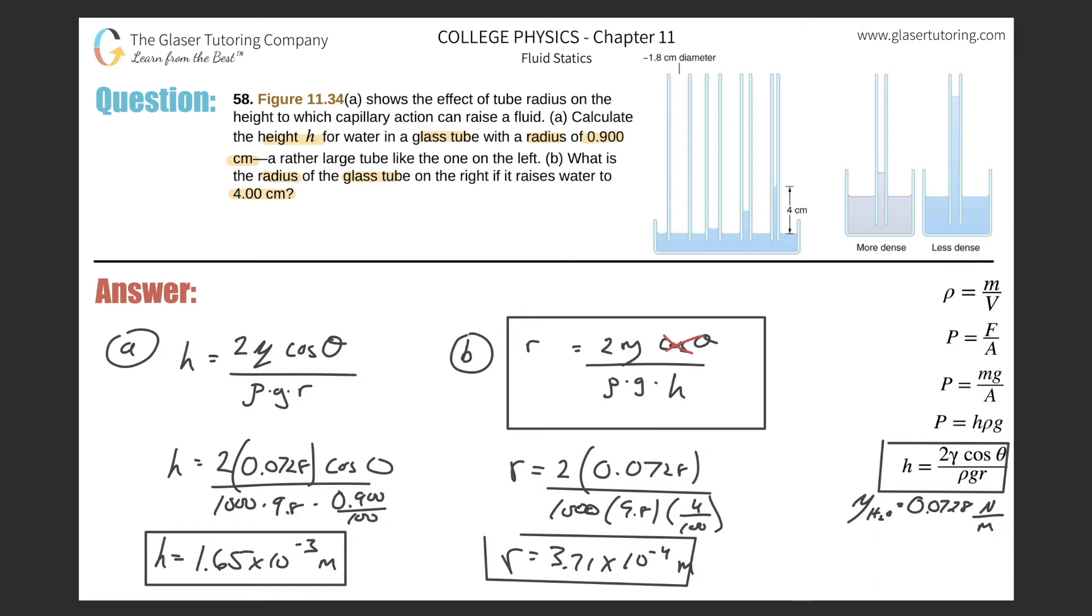Now this answer should make sense. If we found that this is the height that was obtained before, of the tube that was 0.9 centimeters, then we should expect that if the height goes a lot higher in the second case, then that the tube's radius should be smaller. If you notice here in the formula, I'm going to highlight it, the height and the radius are inversely related. So as the radius goes up, height of the fluid goes down in terms of a tube. And vice versa. If the radius goes down, height goes up.